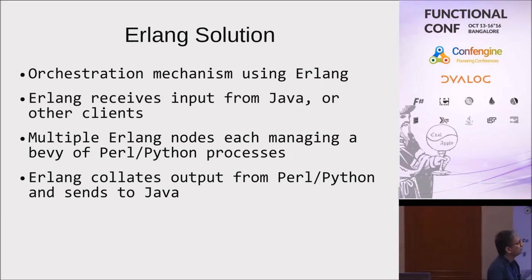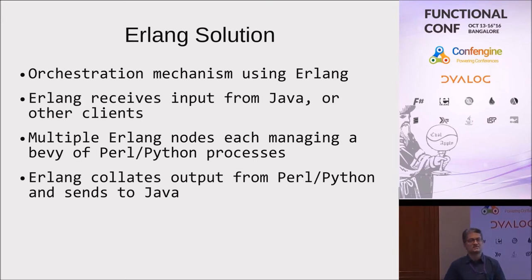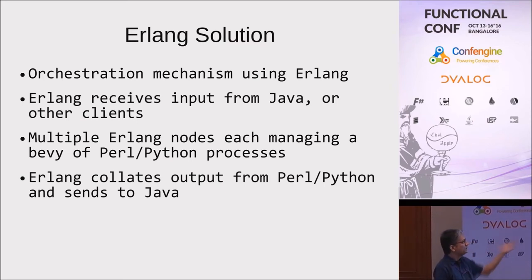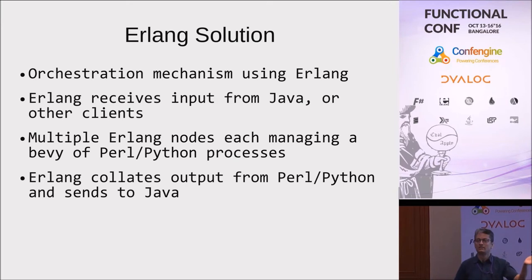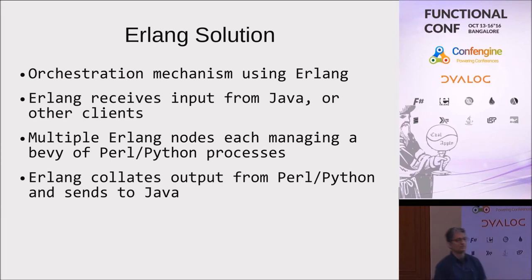So this is what I thought about: orchestrate everything using Erlang. This is something which Erlang excels at — multiple nodes, multiple machines, fault tolerance and scaling. Effectively, Erlang acts as an orchestrator, collects input from Java or any other client, and then each node has a farm of Perl and Python processes. The data from these nodes is collated and passed on to Java, which then passes it on to the analytics engine written in R. This is the outline of the proposed solution — we are not quite there yet, but this is what we would like to have.